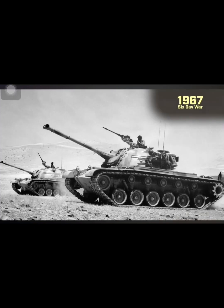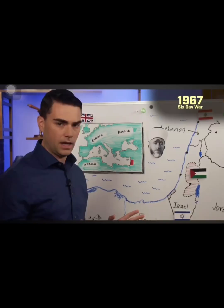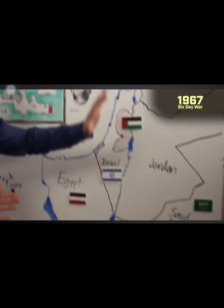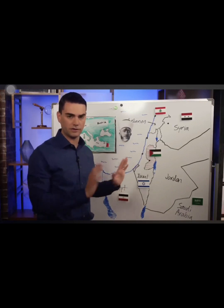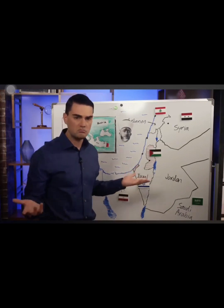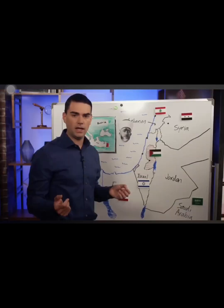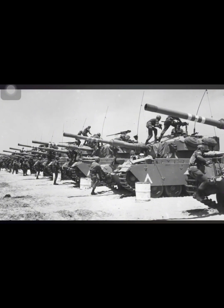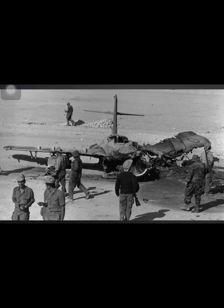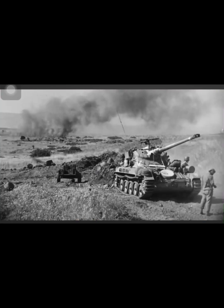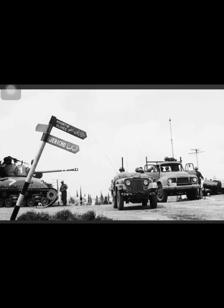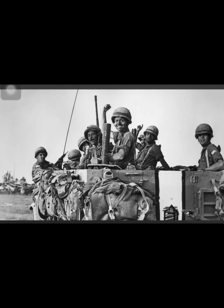In 1967, the Arabs mobilize for an all-out war — Egypt, Jordan, Saudi Arabia, and Syria — intending to finally destroy this Jewish state that is less than 20 years old and just three decades after the Holocaust. Israel instead launches a preemptive war, destroys the entire Egyptian air force on the ground, and in six days proceeds to take the Golan Heights from Syria, the entire Sinai Desert, all of Judea and Samaria to the Jordan River, the Gaza Strip, and control of the old city of Jerusalem.